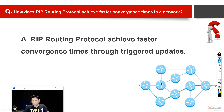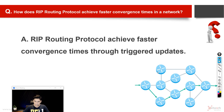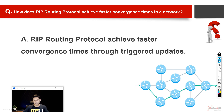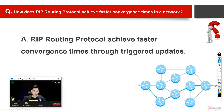Convergence time means the time from when a change happens — or from when all routers are first turned on — until they reach a final stable state after all the exchange of information with each other. That stable state is called the converged state. The time taken from zero or from a change up to convergence is called convergence time. Through triggered updates we achieve faster convergence.